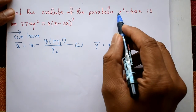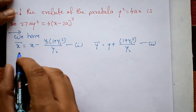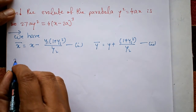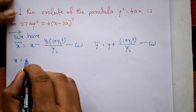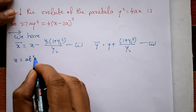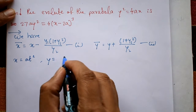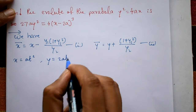The given curve is the parabola y² = 4ax. We use the parametric form: consider x = at² and y = 2at.